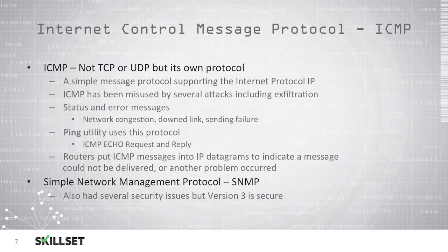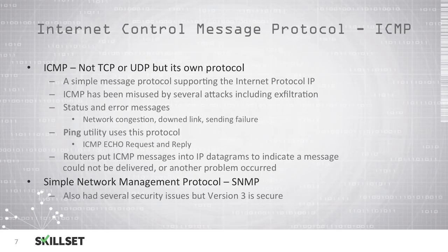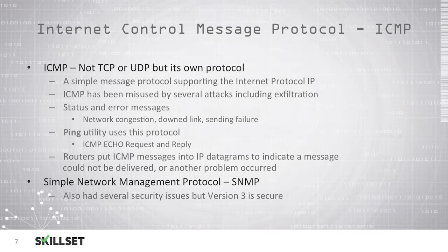ICMP, or Internet Control Message Protocol, is not TCP or UDP — it is its own protocol. You should remember that for the CISSP examination. ICMP is a simple message protocol which supports Internet Protocol, but it can be misused by attackers to create many different types of hazards on your network, including data exfiltration. It allows you to check status and also provides error messages in case there is network congestion, a sending failure, or a downed link. You may be familiar with the Ping Utility, which uses this protocol to check if a system is online using an ICMP echo request and reply message.